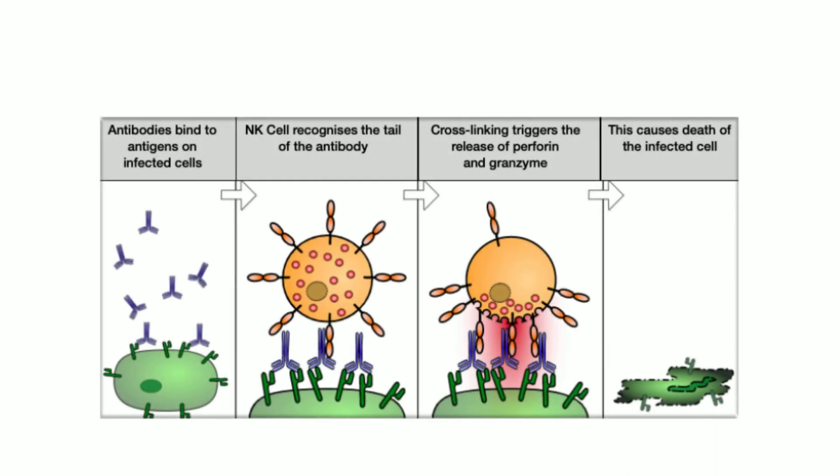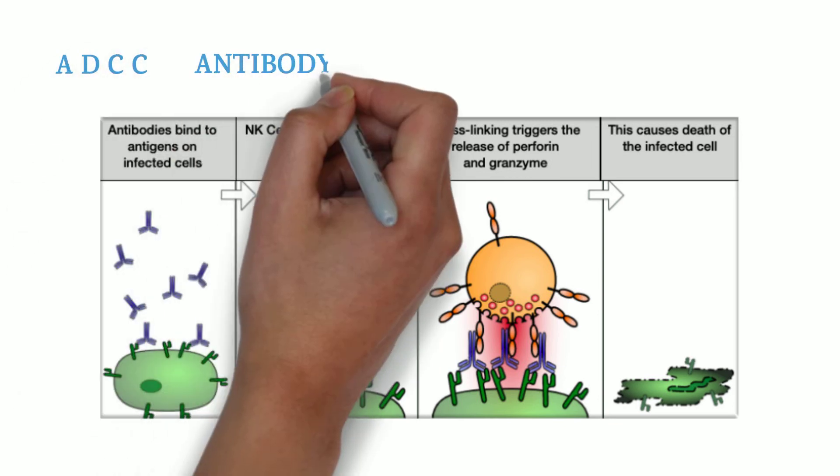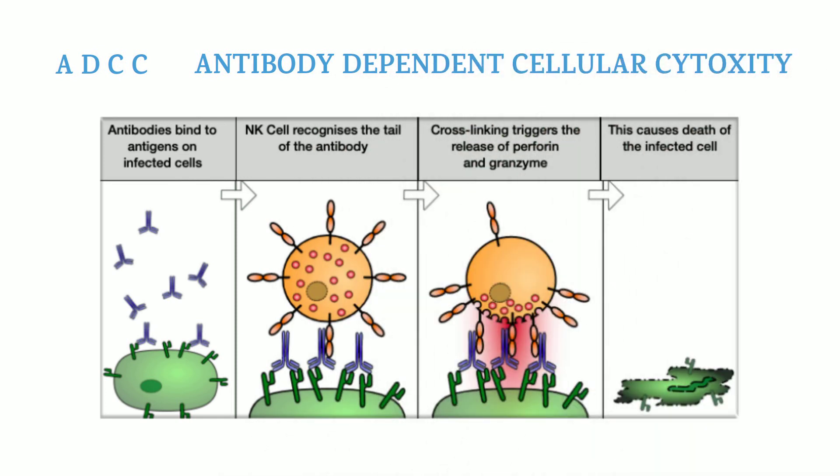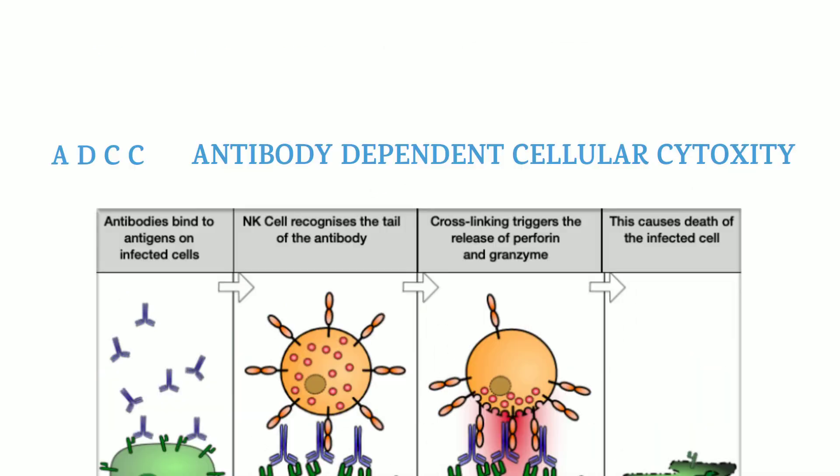An infected cell may produce a surface protein recognized by an antibody. This antibody attaches to it, and because of this attachment, the shape of antibody changes slightly, enough to be recognized by natural killer cell. Natural killer cell attaches itself to the tail of this antibody and starts releasing cytotoxic substances, thus causing death to the infected cell. This is known as ADCC: antibody-dependent cellular cytotoxicity.